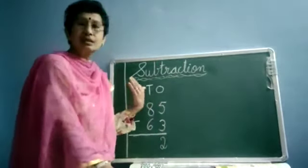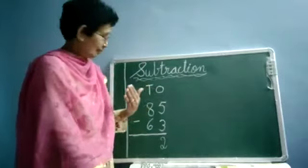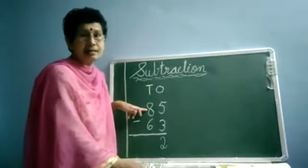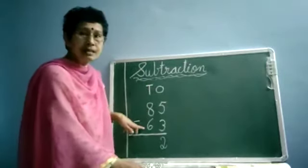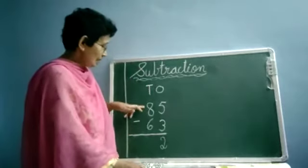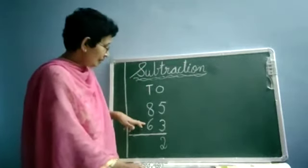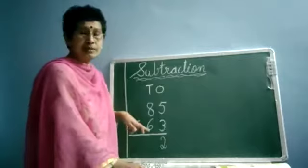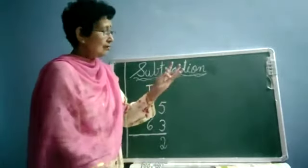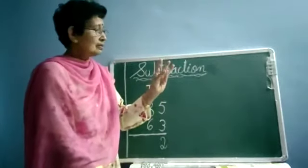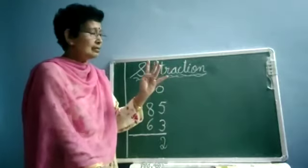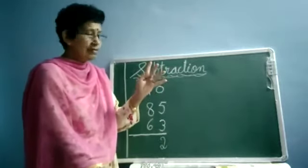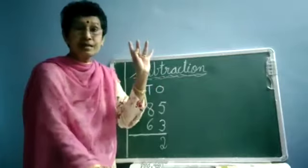Now we are coming towards the tens side. The first number, 8. Second number is 6. From 8 we have to take out, cut down 6 numbers. Again we will count: 1, 2, 3, 4, 5, 6, 7, 8. So keep your finger there.